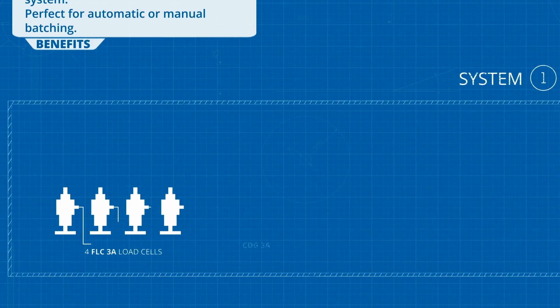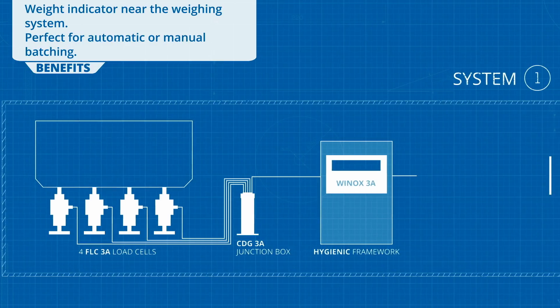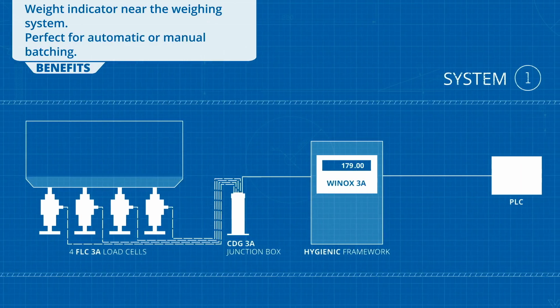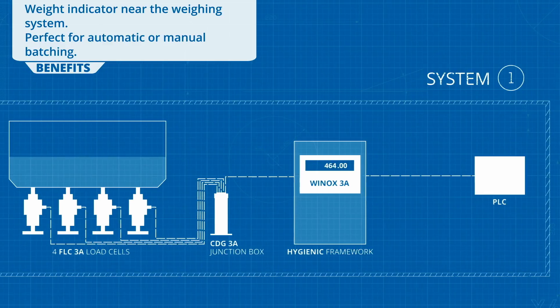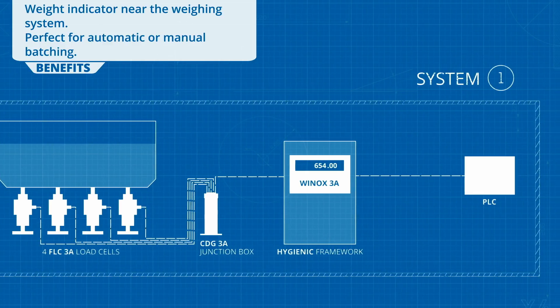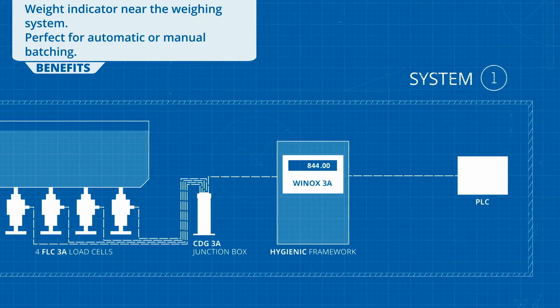Four FLC load cells connected in parallel to the CDG sanitizable junction box. The system is connected to the Winox 3A weight indicator, which is built into the power panel.